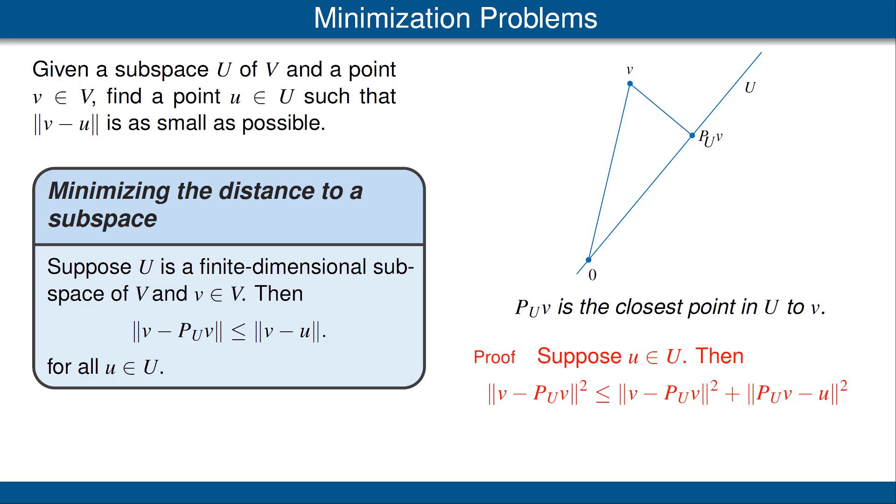This inequality holds because the first term on the right is the same as the term on the left, and we're adding something non-negative. Now we have the equality shown in red, which follows from the Pythagorean theorem.